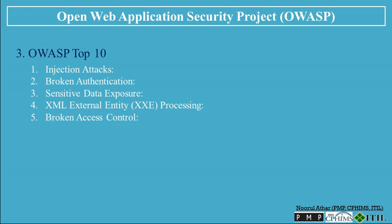Number 5: Broken Access Control. Broken access control occurs when an application does not properly enforce user permissions or restrictions, allowing attackers to access data or perform actions they should not be authorized to do. This could result in unauthorized access to private data, administrative functions, or system resources. To prevent this, ensure proper access control mechanisms and consistently test permissions for each user role.